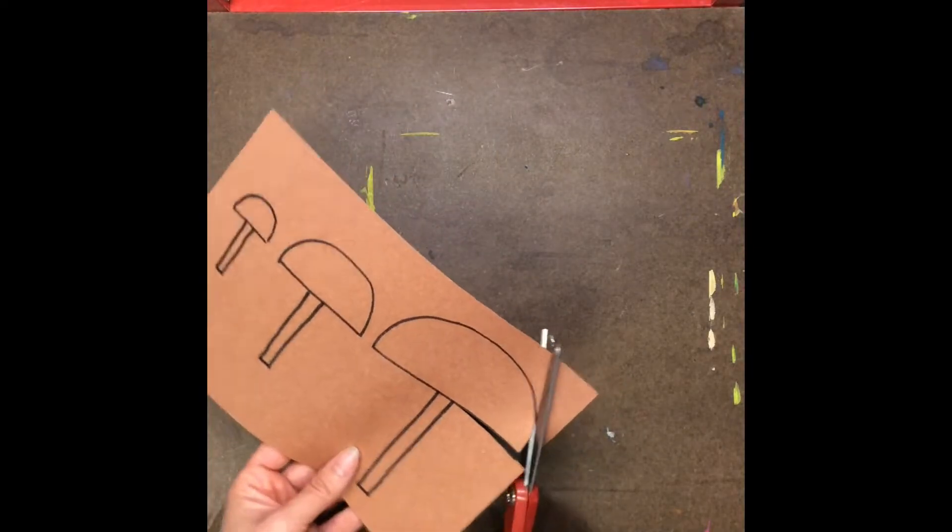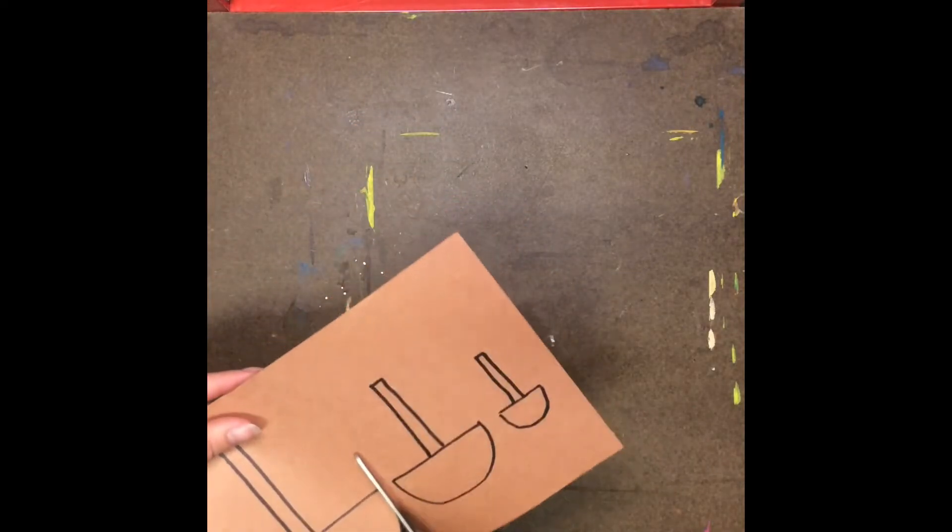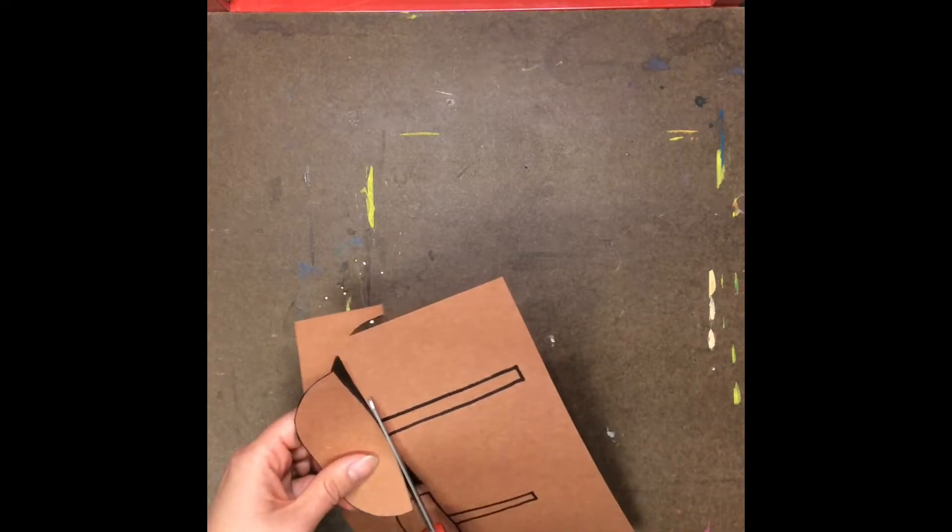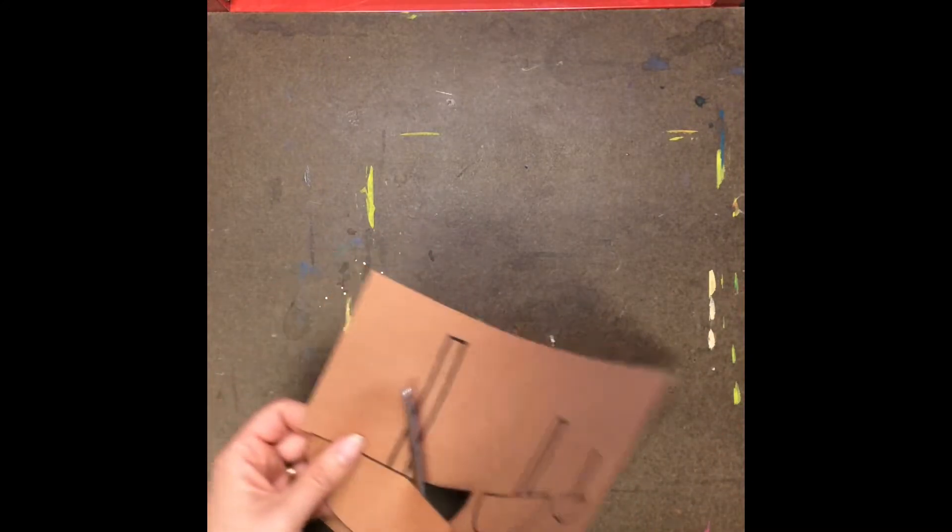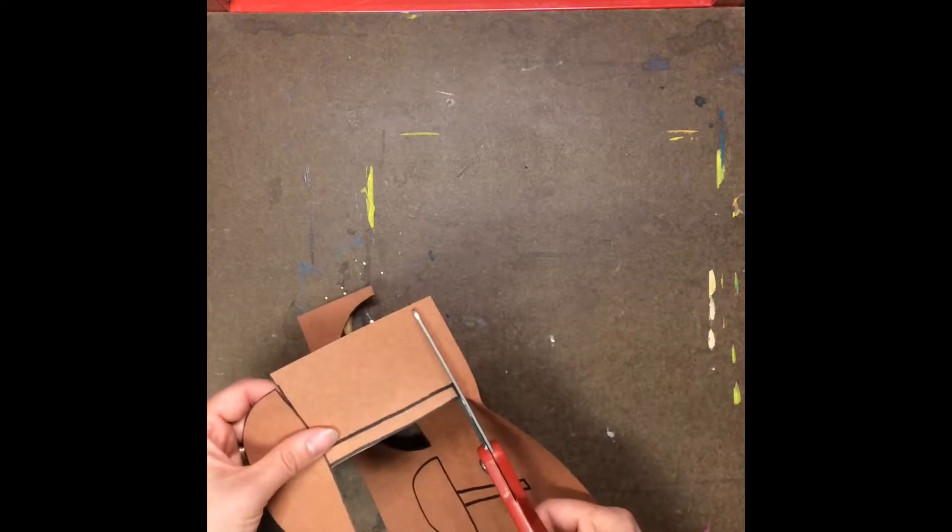So I'm just cutting right on the line. Try hard not to cut off your skinny rectangle but if you do you could always glue it back on to the semicircle. No problem at all.